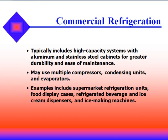Commercial refrigeration usually includes high-capacity systems with aluminum and stainless steel cabinets for greater durability and ease of maintenance. They may use multiple compressors, condensing units, and evaporators. Examples of commercial refrigeration include supermarket refrigerating units, food display cases, refrigerated beverage and ice cream dispensers, and ice making machines.